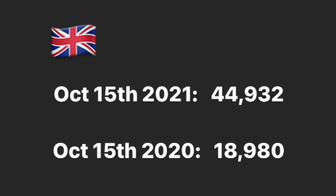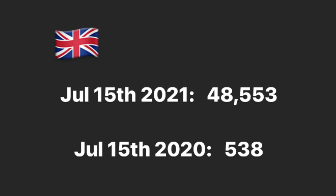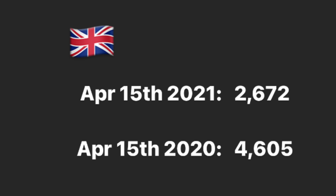Let's move on now to the United Kingdom. October 15th 2021: 44,932 new cases. October 15th 2020: 18,980 new cases. July 15th 2021: 48,553 new cases of COVID-19. July 15th 2020: 538 new cases. April 15th 2021: 2,672 new cases of COVID-19. April 15th 2020: 4,605 new cases.